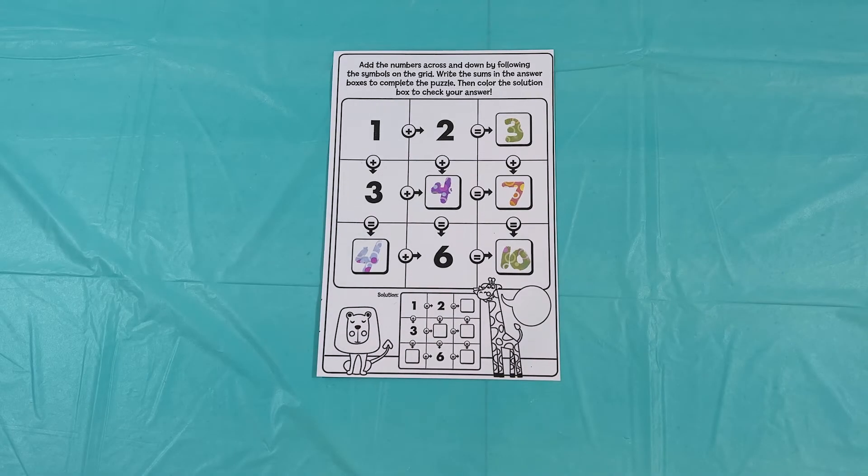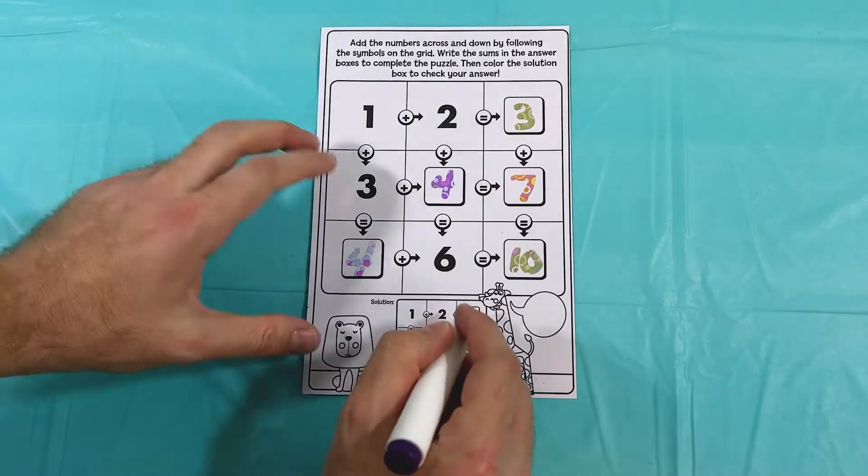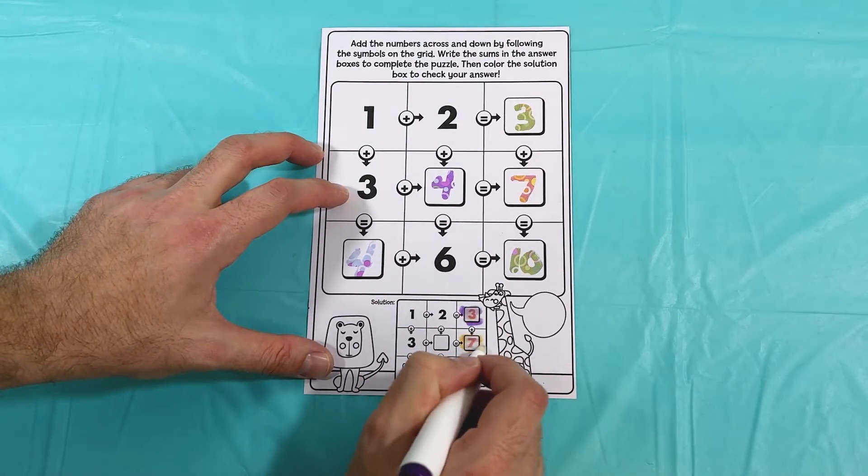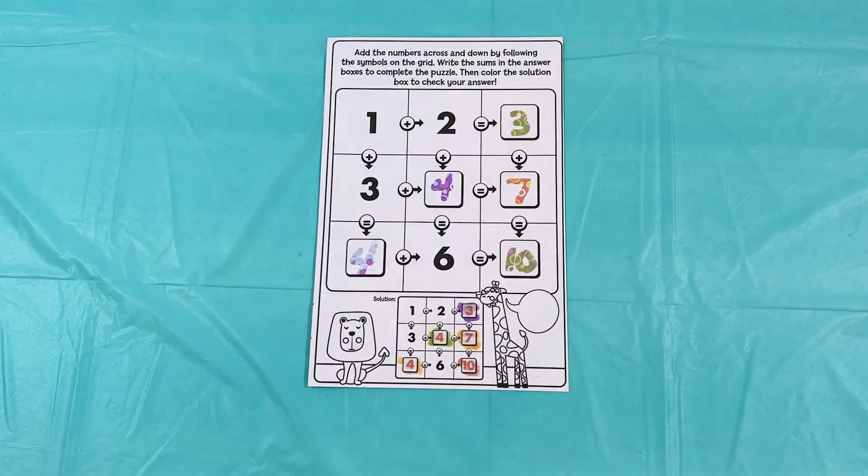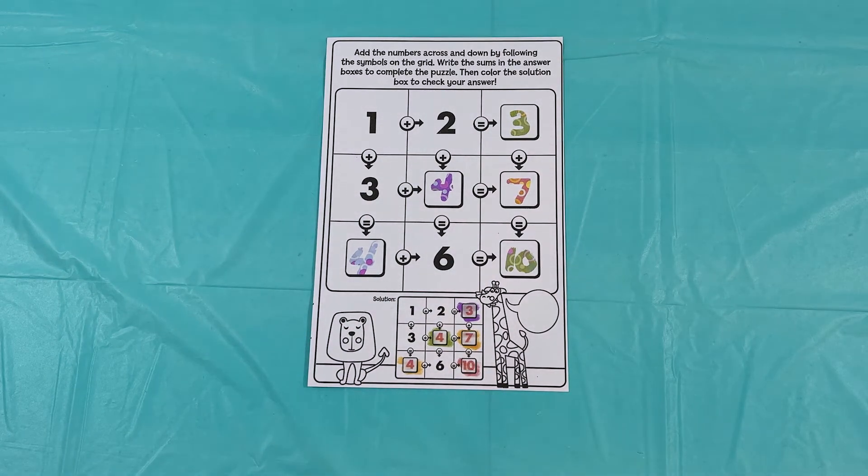Now just to be extra sure, it says here we can color the solution box down below to check our work. So let's see if we did it correctly. Let's go ahead and color it. Yep, look at that. It looks like we got all the answers correct. Great job. Thank you so much for your help.